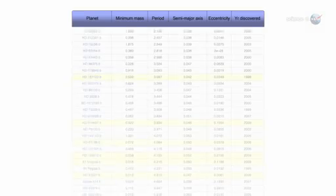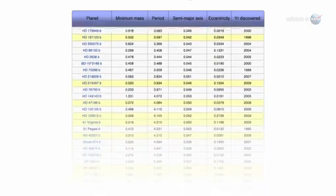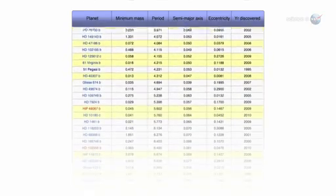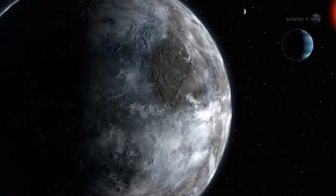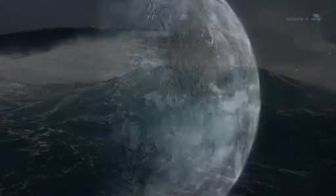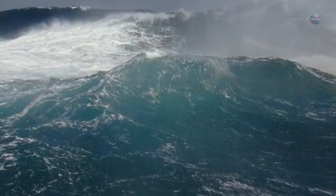As the numbers mount, it seems to be just a matter of time before Kepler finds what astronomers are really looking for: an Earth-like planet orbiting its star in the Goldilocks zone, that is, at just the right distance for liquid water and life.